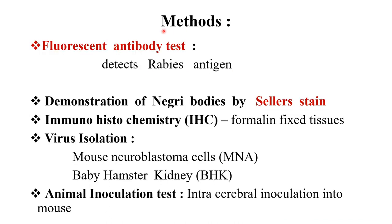Methods used: the gold standard is the fluorescent antibody test (FAT), which detects rabies antigen. We can also demonstrate Negri bodies using Seller's stain or HNA stain — a potential MCQ question is which stain is used to demonstrate Negri bodies. Immunohistochemistry is used in formalin-fixed tissues. Viral isolation is done in mouse neuroblastoma cells and baby hamster kidney cell lines. Animal inoculation involves intracerebral inoculation into mice.